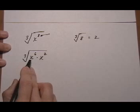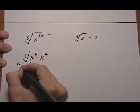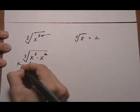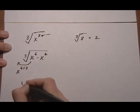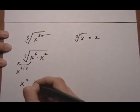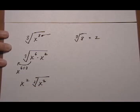Then I could say, okay, I know that the cube root of x to the 6 is going to be x to the 6 divided by 3. That's going to come out to be x squared. Then I'd have cube root of leftover x squared, like that.